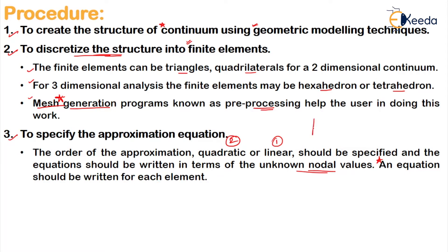We have to write the approximation function for each and every element. For example, if you are dividing the structure into 8 elements, you have to write 8 approximation equations, one for each element. If it is a very complex structure there will be thousands or even lakhs of elements, so using software becomes easier because you don't have to do it manually.